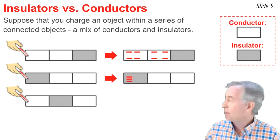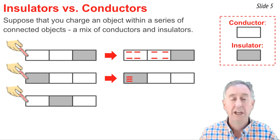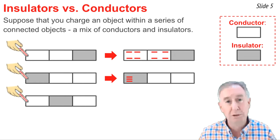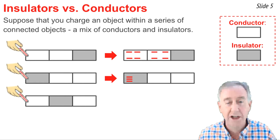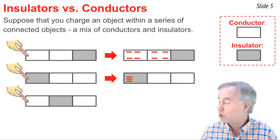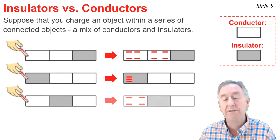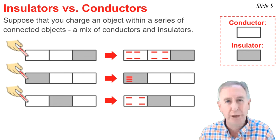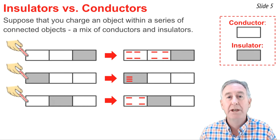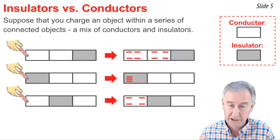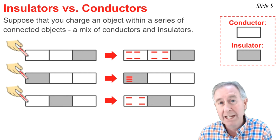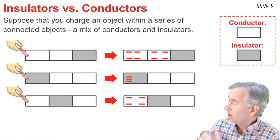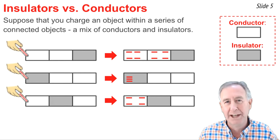In the third example, we have a conductor followed by an insulator followed by a conductor, and we touch the conductor on the left. The charge distributes itself across that conductor, but because that conductor is attached to an insulator, it does not travel into the insulator, because insulators do not permit distribution of charge. And because it can't even enter the second object, it can't make its way toward the third object, and we end up with charge only on the first conductor.